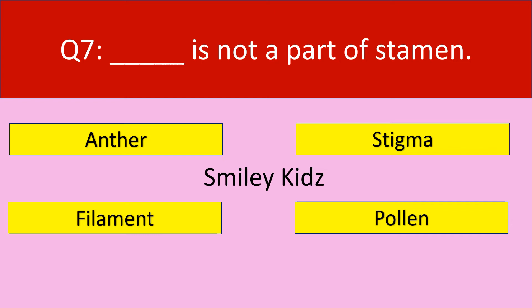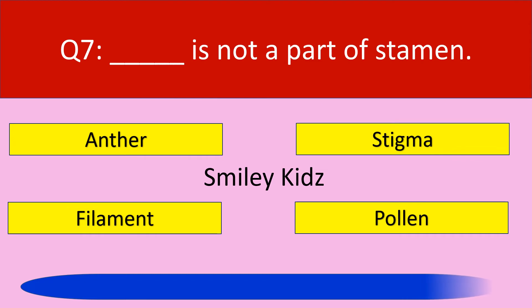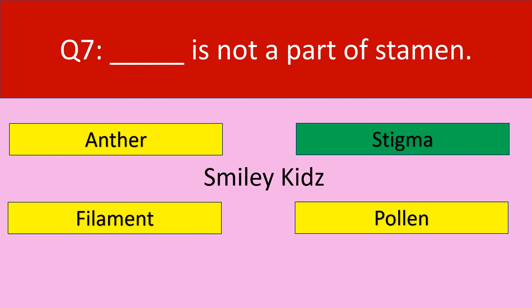Question number 7. Dash is not a part of stamen. Options are: anther, stigma, filament, pollen. Your time starts now. The correct answer is stigma. Stigma is not a part of stamen.